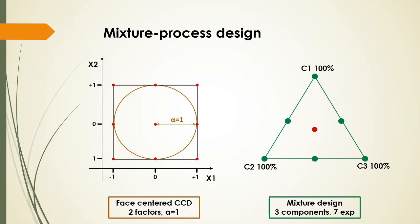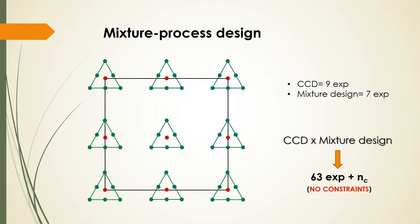Normally, when we have a mixture process design, we need to combine a classical response surface design — for example a central composite design — and a mixture design. In this case, when we have two factors and three components and we want to perform seven mixture experiments, we have a combination that will lead to 63 experiments plus a certain number of central points to evaluate experimental variance. This is the case when no constraints are present for the mixture variables.